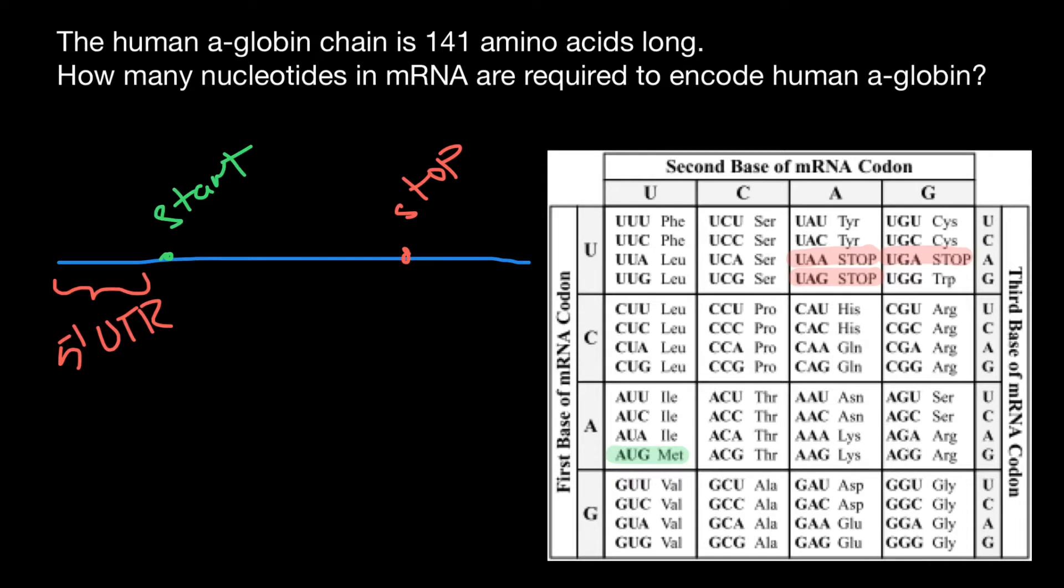After messenger RNA is transcribed, it undergoes certain modifications. In this region, a poly-A tail would be added, so many adenines would be added.